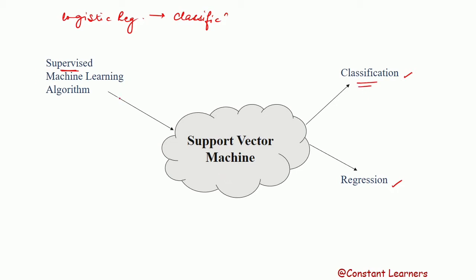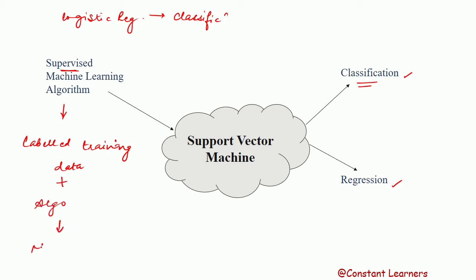Support vector machine is a supervised machine learning algorithm, which means we use labeled training data to generate the models. Along with labeled training data, some algorithms are used to create the models, and new data is given to these models so that they can classify the data into proper respective categories.